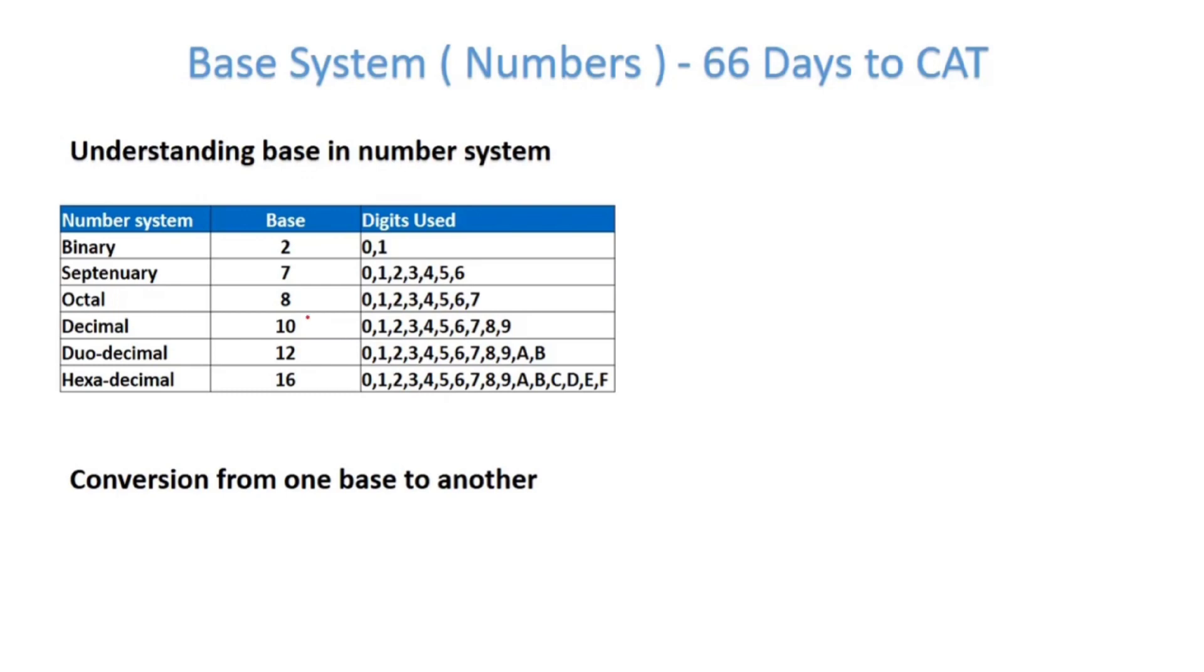If we talk about base in case of number system, we generally operate in something called a decimal number system, which is also having a base of 10. So what is having a base 10 mean here? The number of digits that is there is 10. For example, 0, 1, 2, 3 going on till 9. We have 10 digits here. So that's a decimal base or a 10 base system.